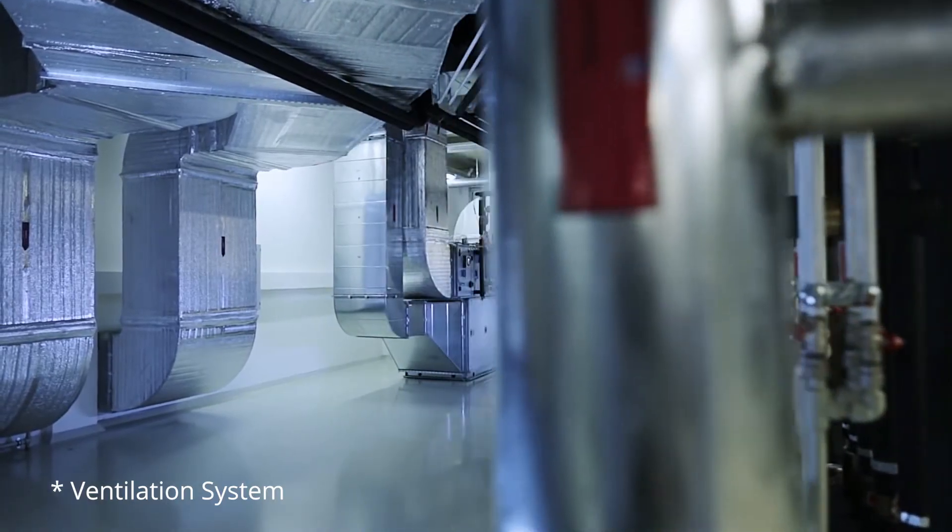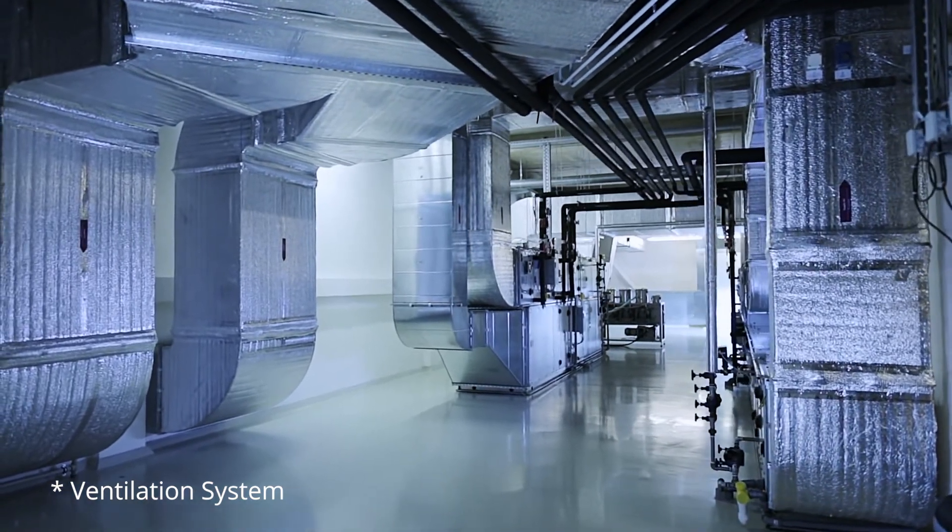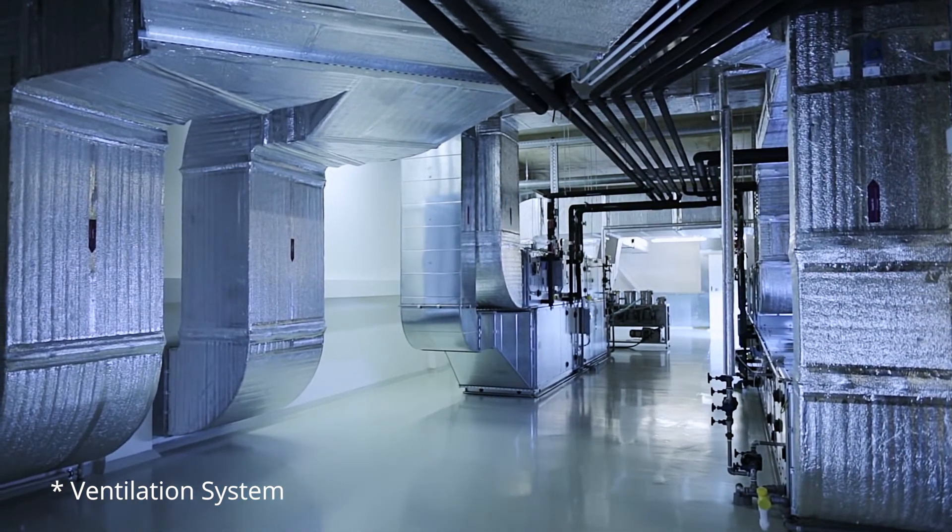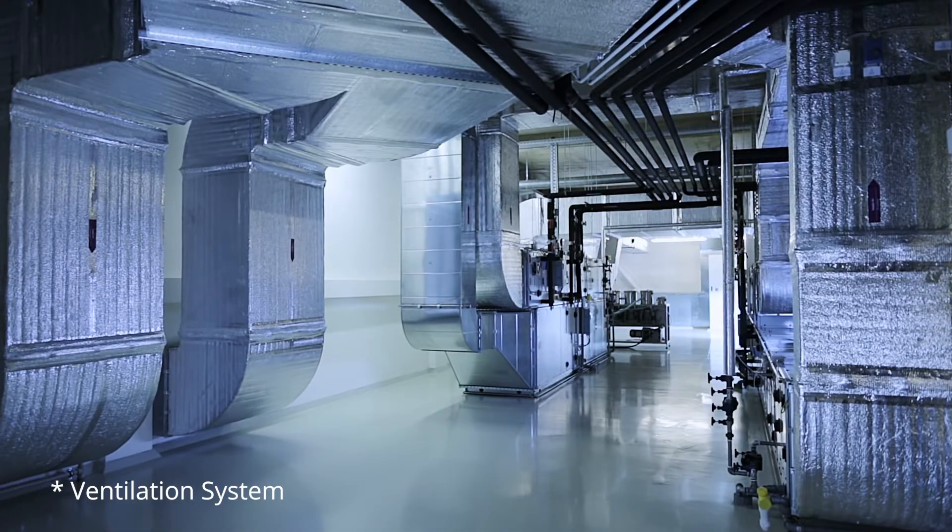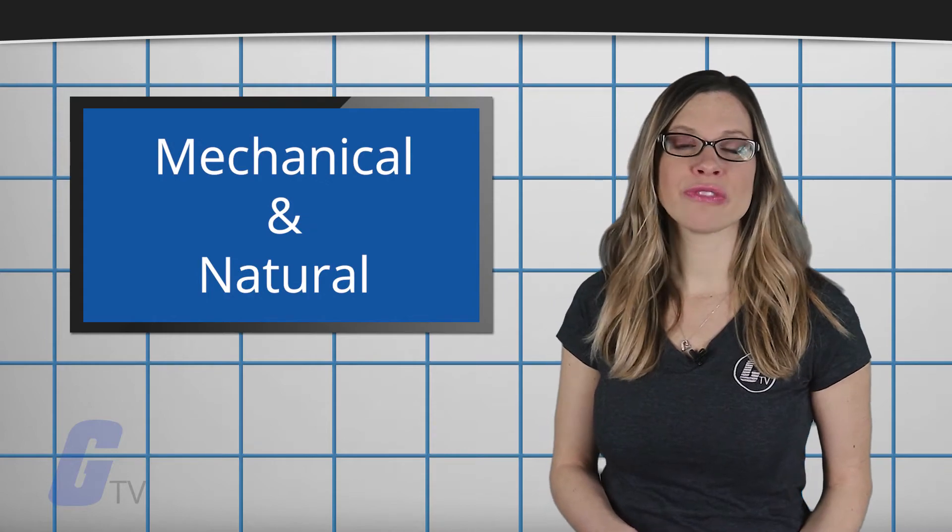Ventilation covers both exchanging air with the outside of the building and circulating air within the building, and it is crucial to maintaining indoor air quality. The two main forms of ventilation in use today are mechanical and natural ventilation.